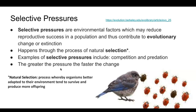Examples of selective pressures include competition — when two different organisms are competing for the same thing, whether it be food source or habitat. Another example is predation — when one organism eats another. The organism doing the eating is the predator, and the organism that will be eaten is the prey. For instance, a red-tailed hawk is a predator that will prey upon mice running throughout a field. The greater the pressure, the faster the change: a lot of pressure on a population will cause change in that population to be seen much more quickly.